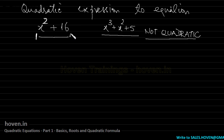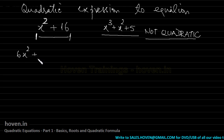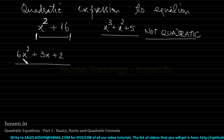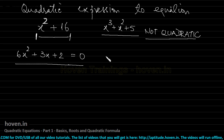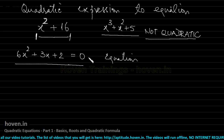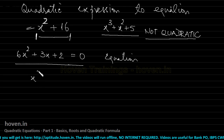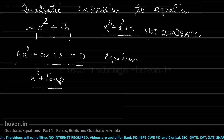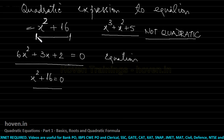6x² + 3x + 2 is a quadratic expression. When we write a quadratic expression equal to 0, it becomes a quadratic equation — for example, x² + 16 = 0. You can recognize an equation by the presence of the equal-to sign, whereas an expression has no equal-to sign; it is simply a combination of terms.